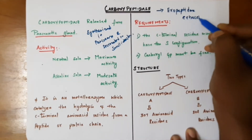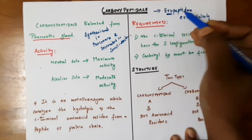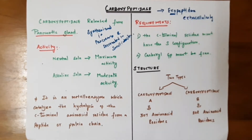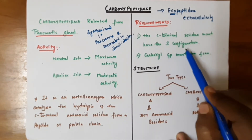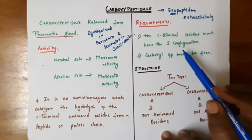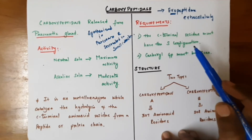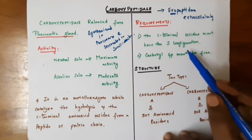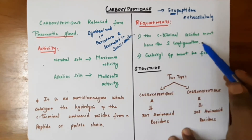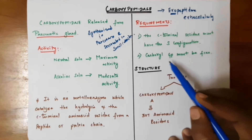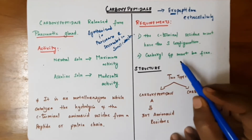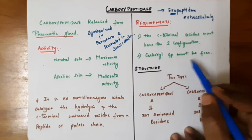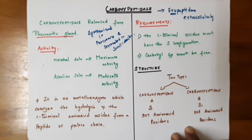Carboxypeptidase is otherwise known as an exopeptidase — it works extracellularly. 'Exo' means outside, hence the name exopeptidase. This enzyme has specific requirements: first, the C-terminal residue must have the S-configuration, meaning when plane polarized light is passed through the molecule it rotates anti-clockwise. Second, the carboxy group at the C-terminal must be free — only then can the enzyme work.